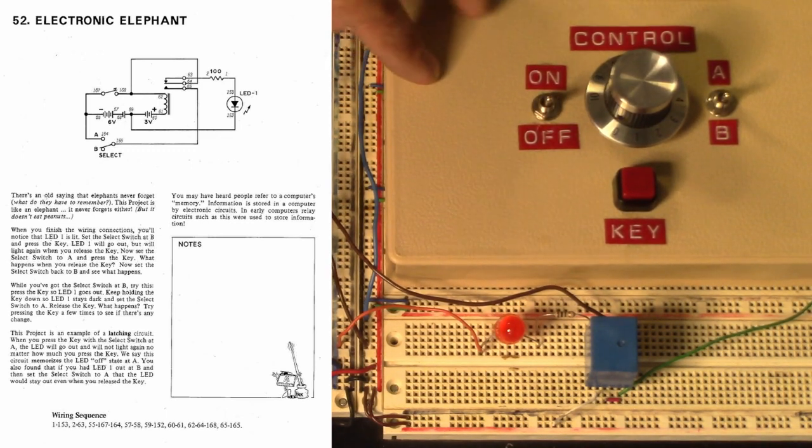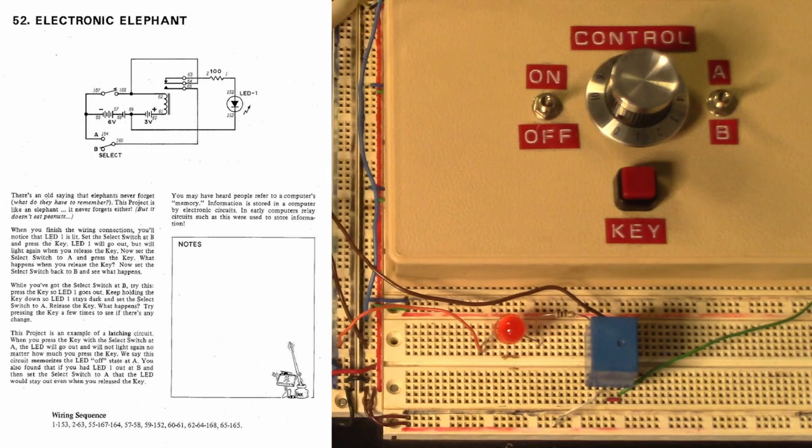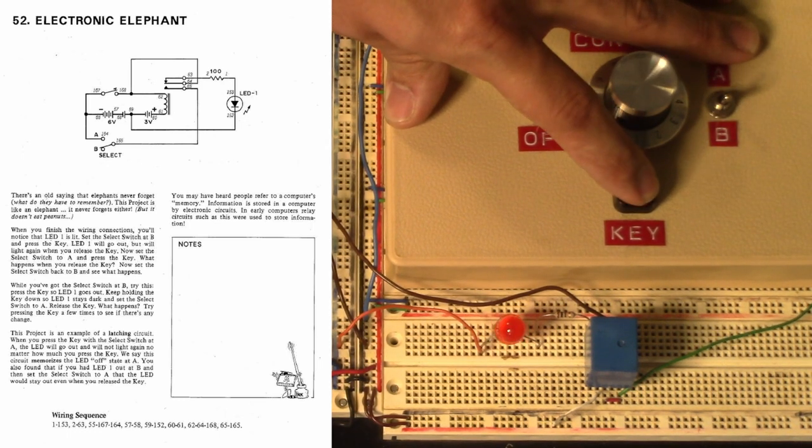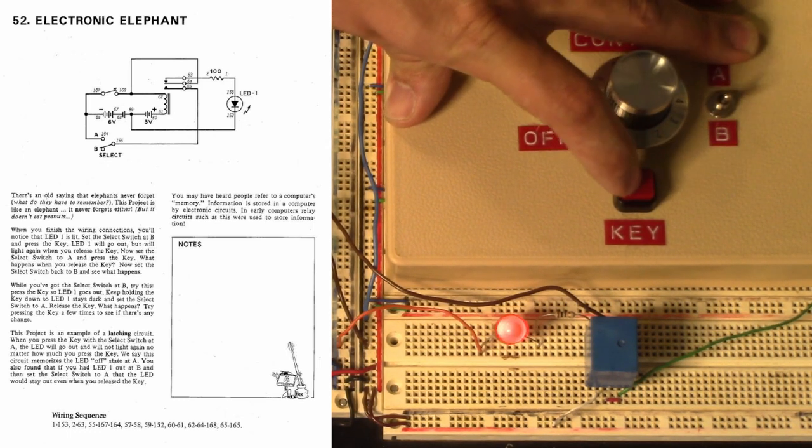When you finish the wiring connections, you'll notice that LED1 is lit. Set the select switch at B and press the key. LED1 will go out, but will light again when you release the key.